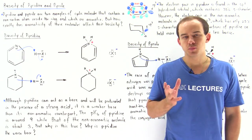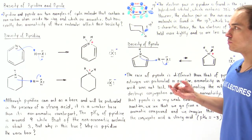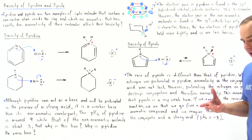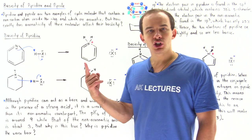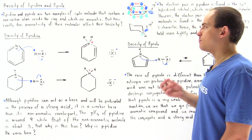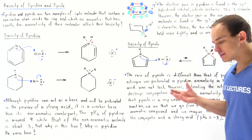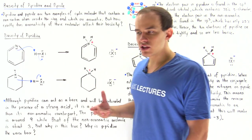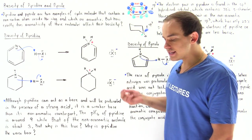As we discussed in the previous lecture, pyridine and pyrrole are two examples of cyclic molecules that each contain one non-carbon atom and which are also aromatic. But how exactly does the aromaticity of these two molecules actually affect their basicity?